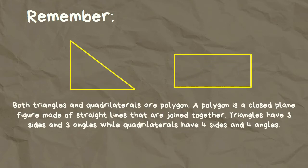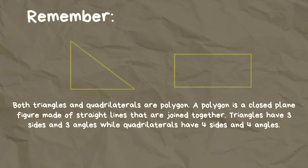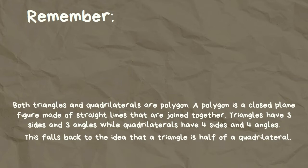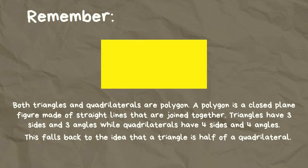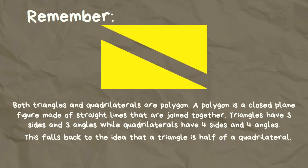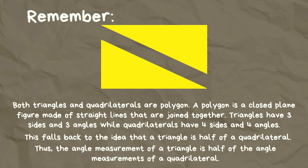Both triangles and quadrilaterals are polygons. A polygon is a closed plane figure made of straight lines that are joined together. Triangles have three sides and three angles, while quadrilaterals have four sides and four angles. This falls back to the idea that a triangle is half of a quadrilateral. Thus, the angle measurement of a triangle is half of the angle measurements of a quadrilateral.